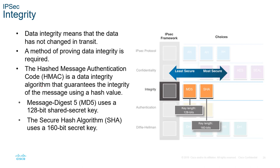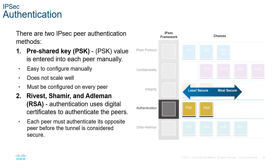Once we've decided the integrity key, we look at authentication. The two main types are pre-shared key or RSA-based key. Pre-shared key is easy to configure but doesn't scale well and must be configured per peer. With RSA we can authenticate using digital certificates to identify peers; however, each peer must authenticate to its opposite peer before the tunnel is considered secure, so there is more configuration with RSA.